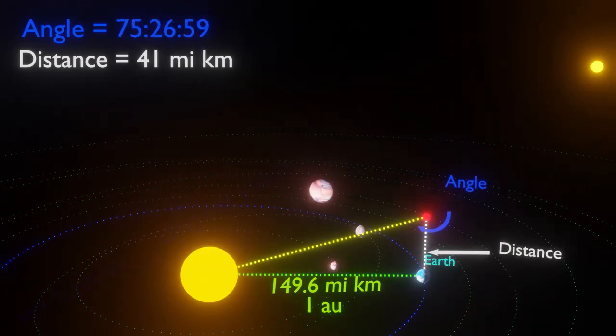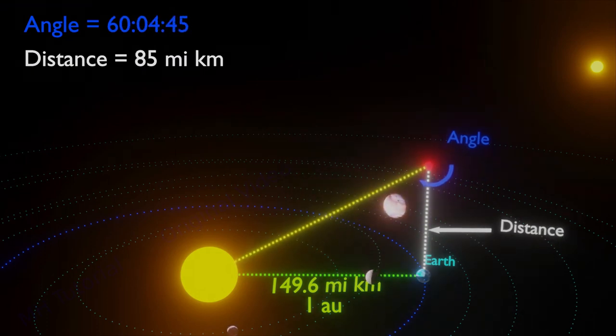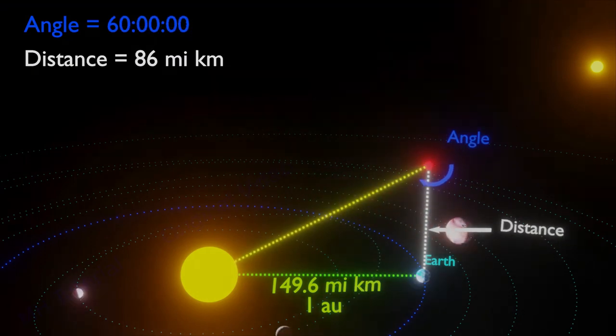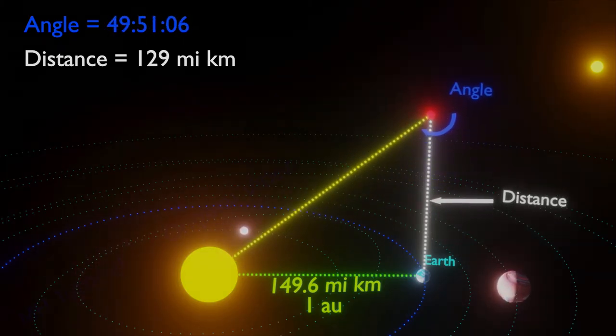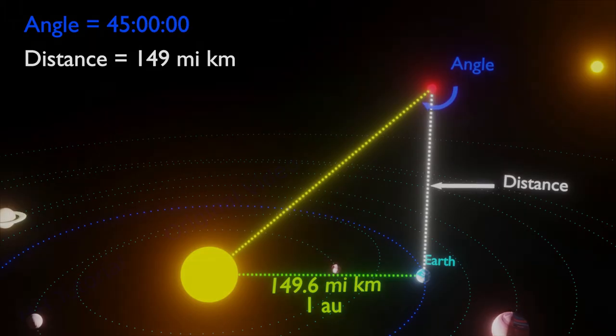For example, at about 86 million kilometers from the earth, the object generates a 60 degree angle. At a distance of 1 astronomical unit, or 149.6 million kilometers, the angle is 45 degrees.